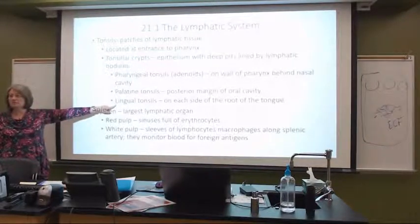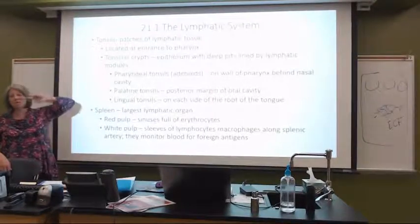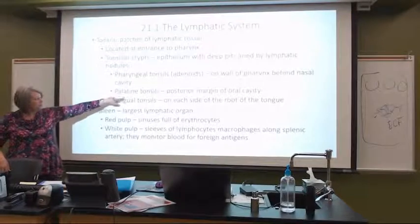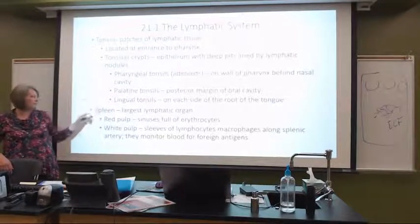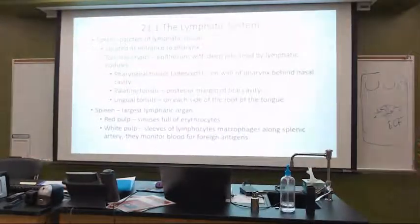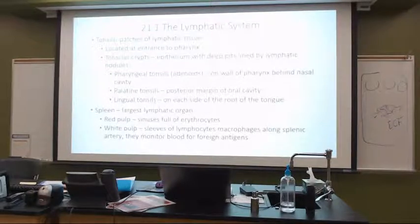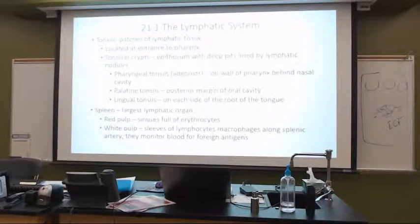Did you know we have that many tonsils? The adenoids are going to be close to our nasal cavity, and we're going to see palatine and lingual closer to the mouth area, the oral cavity. Our spleen is the largest of these lymphatic organs. We're going to find it contains what they call red pulp and white pulp — because we've got the red blood cells and the white cells. In the spleen we're going to find the red pulp where we have our erythrocytes.